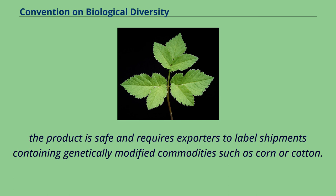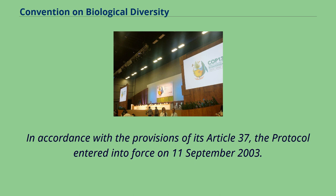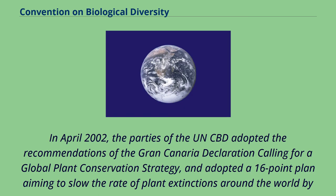The required number of 50 instruments of ratification/accession/approval/acceptance by countries was reached in May 2003. In accordance with the provisions of its Article 37, the protocol entered into force on September 11, 2003. In April 2002, the parties of the UNCBD adopted the recommendations of the Gran Canaria Declaration calling for a global plant conservation strategy, and adopted a 16-point plan aiming to slow the rate of plant extinctions around the world by 2010.